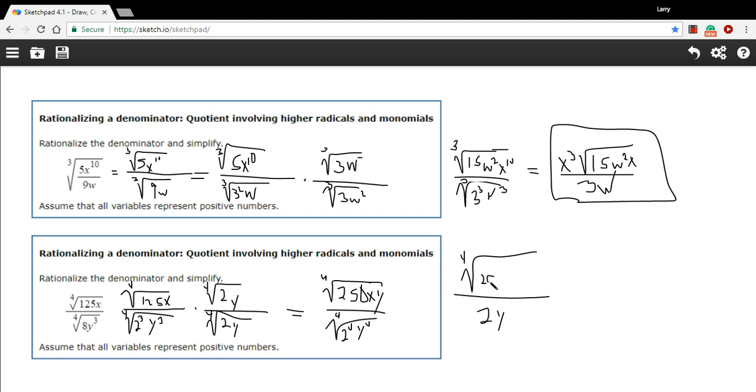certainly not just plain old xy. So we just leave that as it is, the fourth root of 250xy over 2y is our answer. So that's a little bit of work with rationalizing denominators with these higher roots.